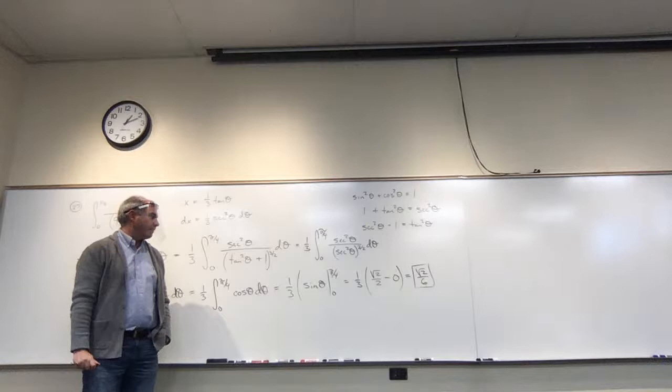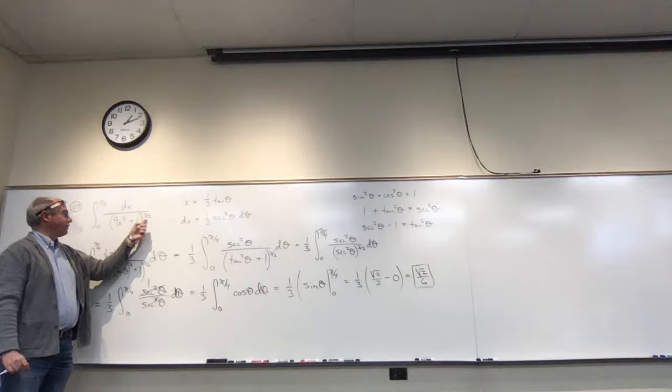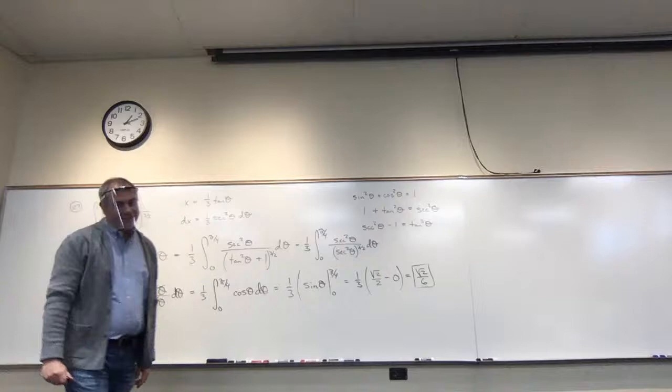That gives one-third times sine theta evaluated from zero to pi over four, which is one-third times sine of pi over four minus sine of zero. Sine of pi over four is root two over two, and sine of zero is zero, so we get one-third times root two over two, which equals root two over six.